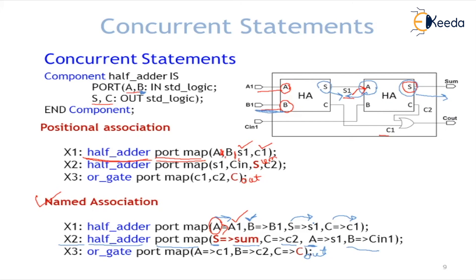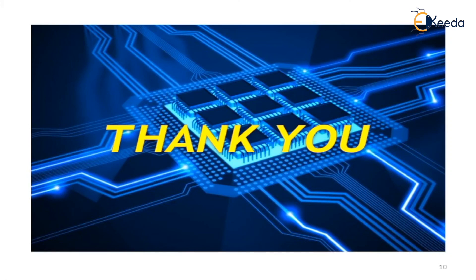In positional association we must follow the position of the component signals as declared in the component declaration — inputs first, then outputs in sequence — otherwise it will give wrong results. Named association avoids positional mistakes. These are the two types of component instantiation used in VHDL. In the next lecture we will see examples of with-select and when-else. Thank you.